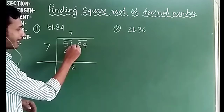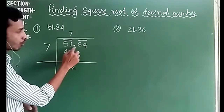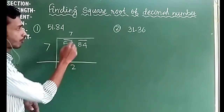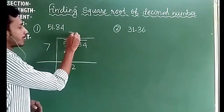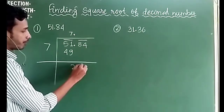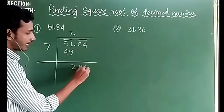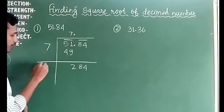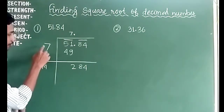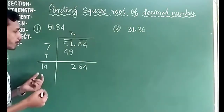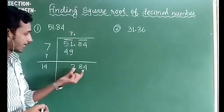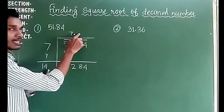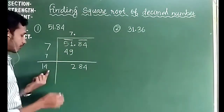As we cross the decimal point, we put a decimal point in the answer. We bring down 84 and add 7 to the current divisor, making it 14. So our new divisor starts with 14.